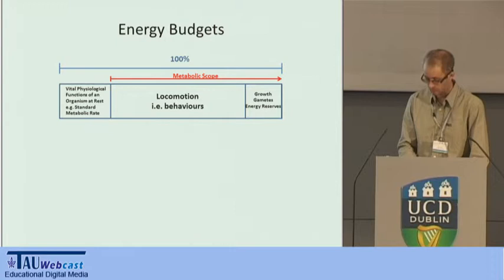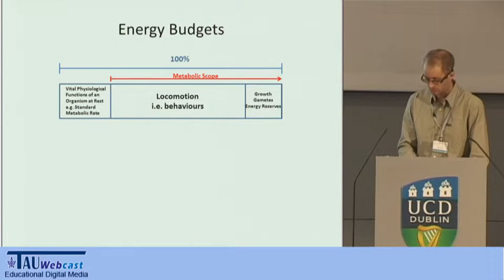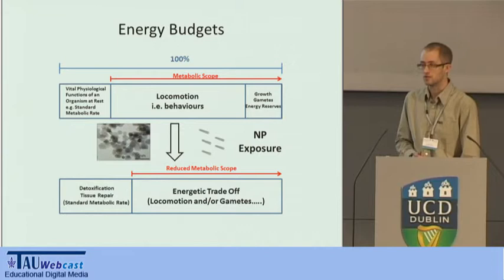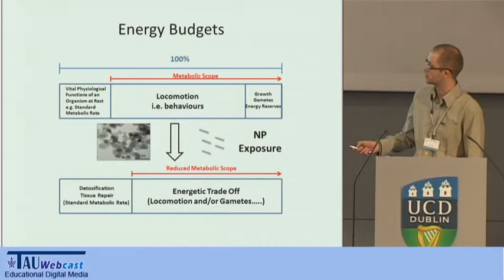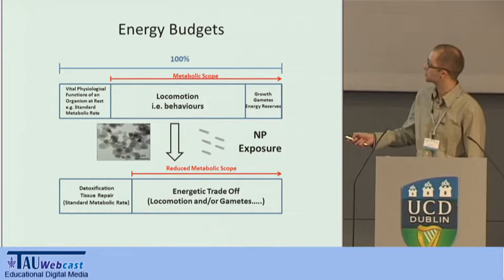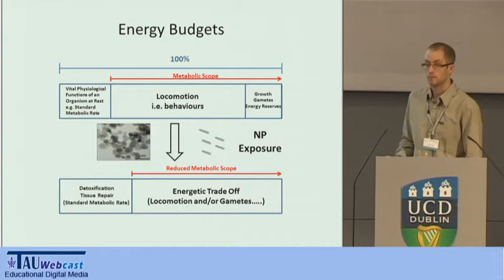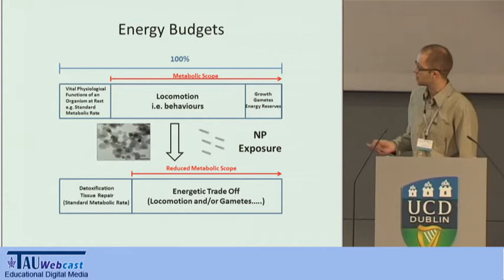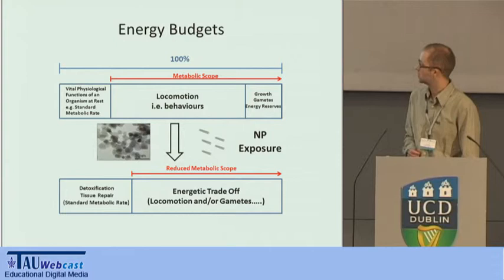Why might nanoparticle exposures be relevant to bioenergetics? Upon exposure, what we might expect is that energetic costs of dealing with these particles might increase — processes involved in detoxification or tissue repair. As the costs of the standard metabolic rate increase, metabolic scope is reduced, and there's less energy available for locomotion and behavior, or the production of gametes. There's effectively an energetic trade-off within the animal's energy budget, and the animal must sacrifice either activity or partition energy elsewhere to deal with the contaminant.